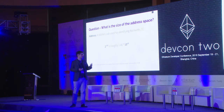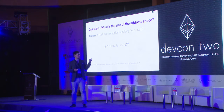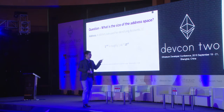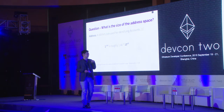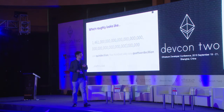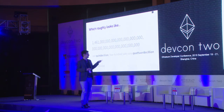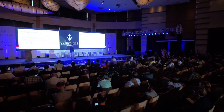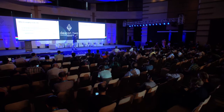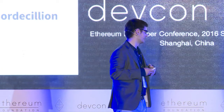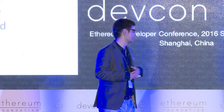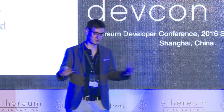If you read the yellow paper, an address is a 160-bit code used for identifying accounts. 2 to the 160 is roughly 1.46 times 10 to the 48, which looks like this — 1 quindecillion. So about 1.5 quindecillion possible addresses. This is mainly to illustrate that math is cool, but we have a large address space to work from.